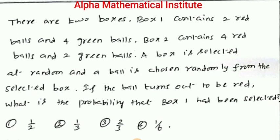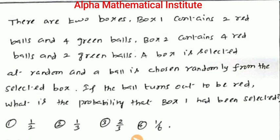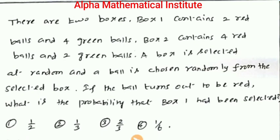There are two boxes. Box 1 contains two red balls and four green balls. Box 2 contains four red balls and two green balls. A box is selected at random and a ball is chosen randomly from the selected box. If the ball turns out to be red, what is the probability that box 1 had been selected? First option: 1/2, second option: 1/3, third option: 2/3, fourth option: 1/6.